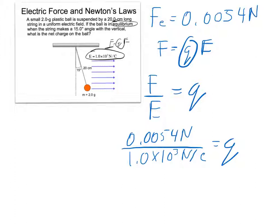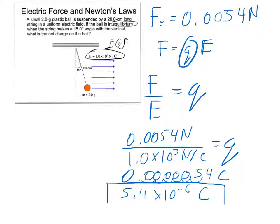So I'm going to solve that out using the calculator real fast. The answer I get is 0.0000054 coulombs for charge, or 5.4 times 10 to the negative 6 coulombs. And that is the charge on the balloon.